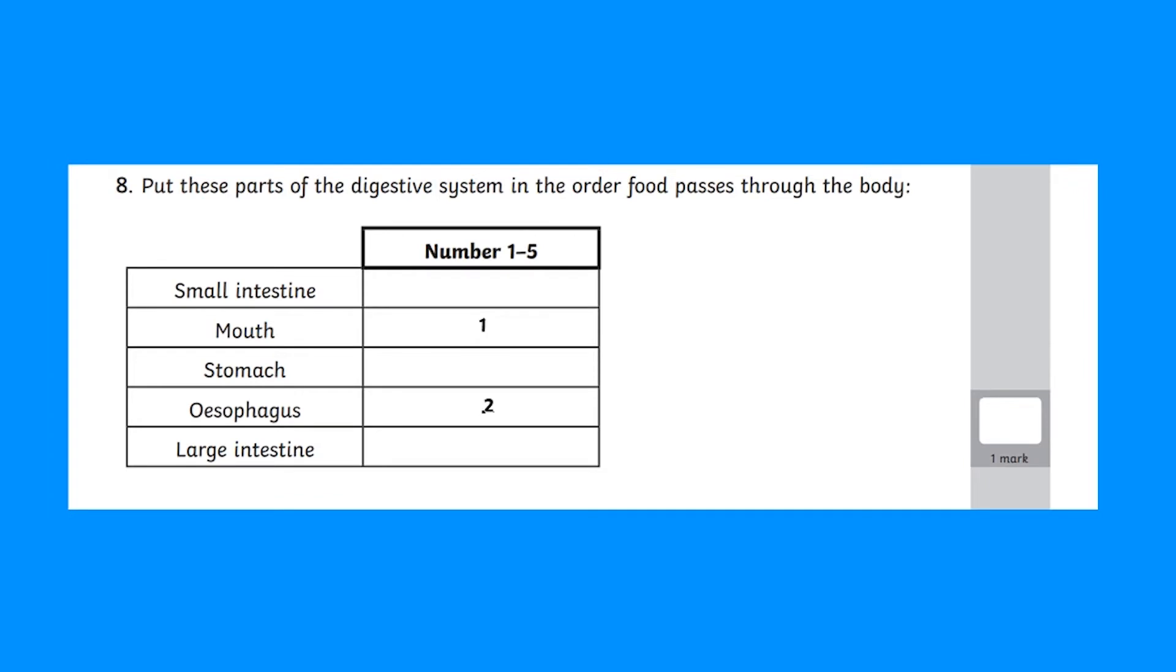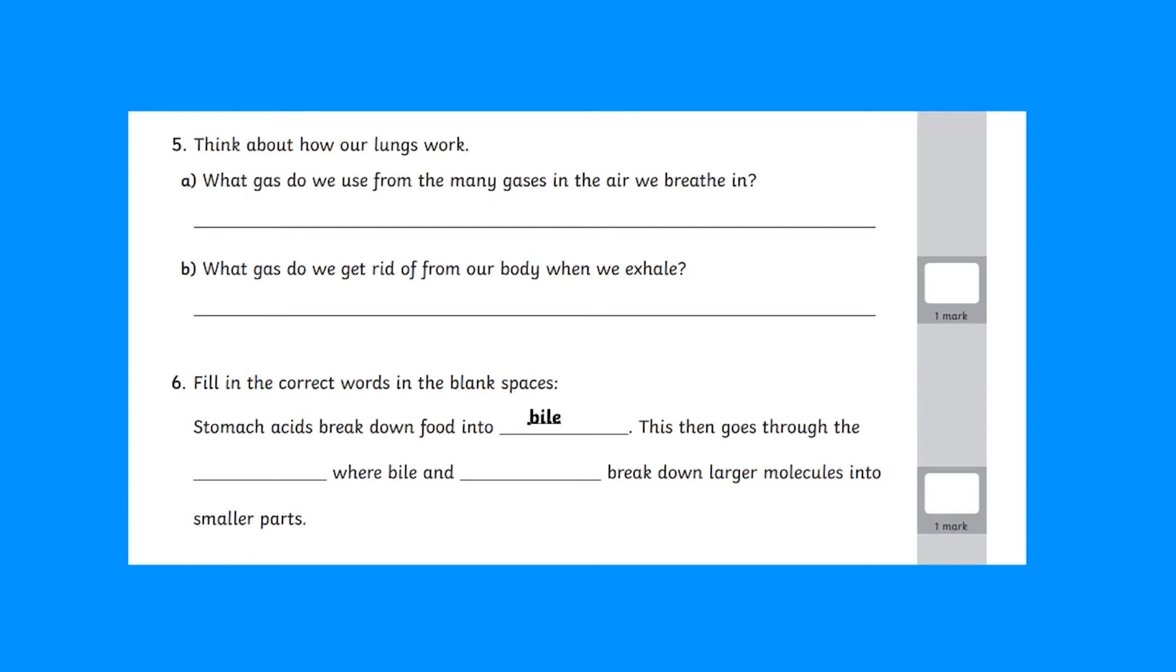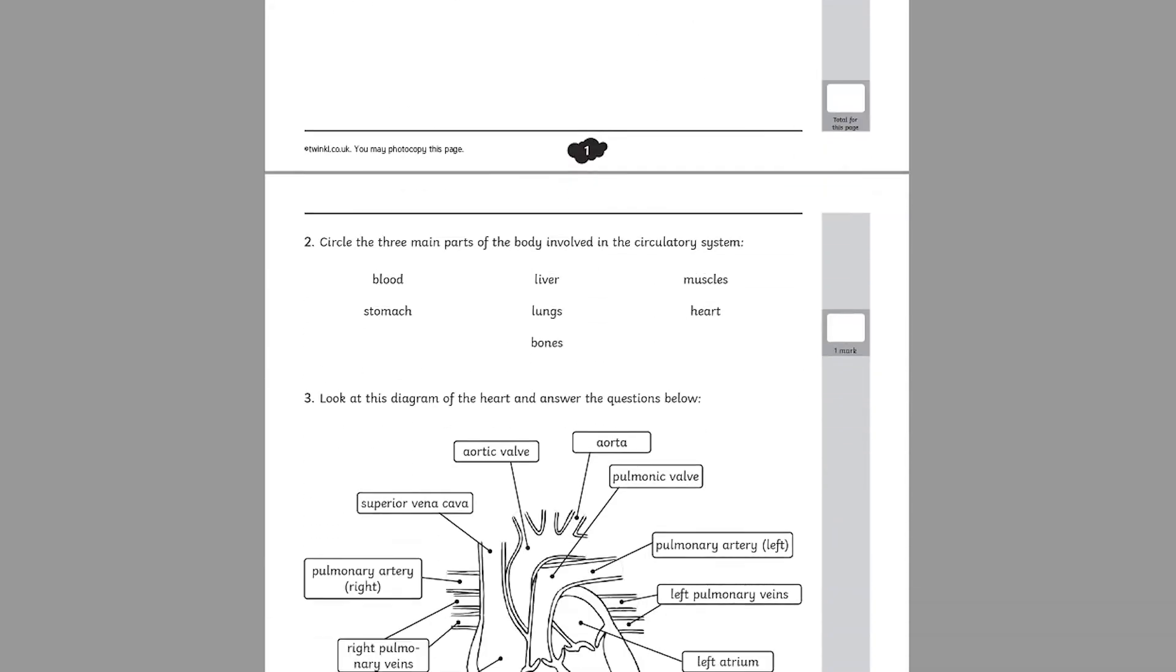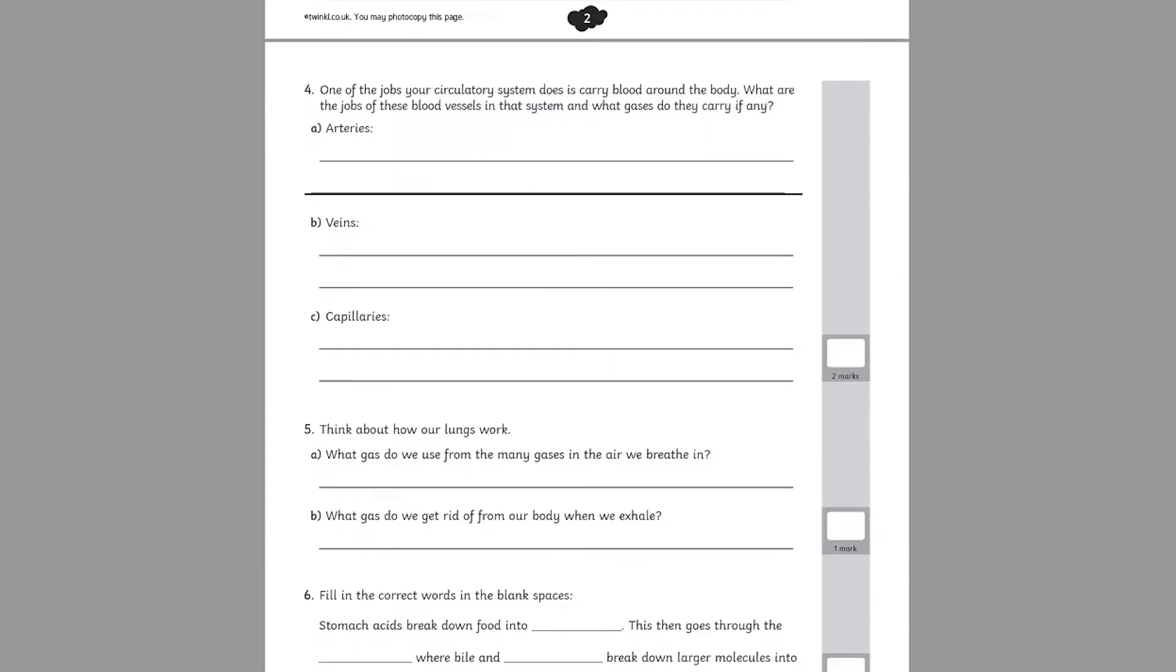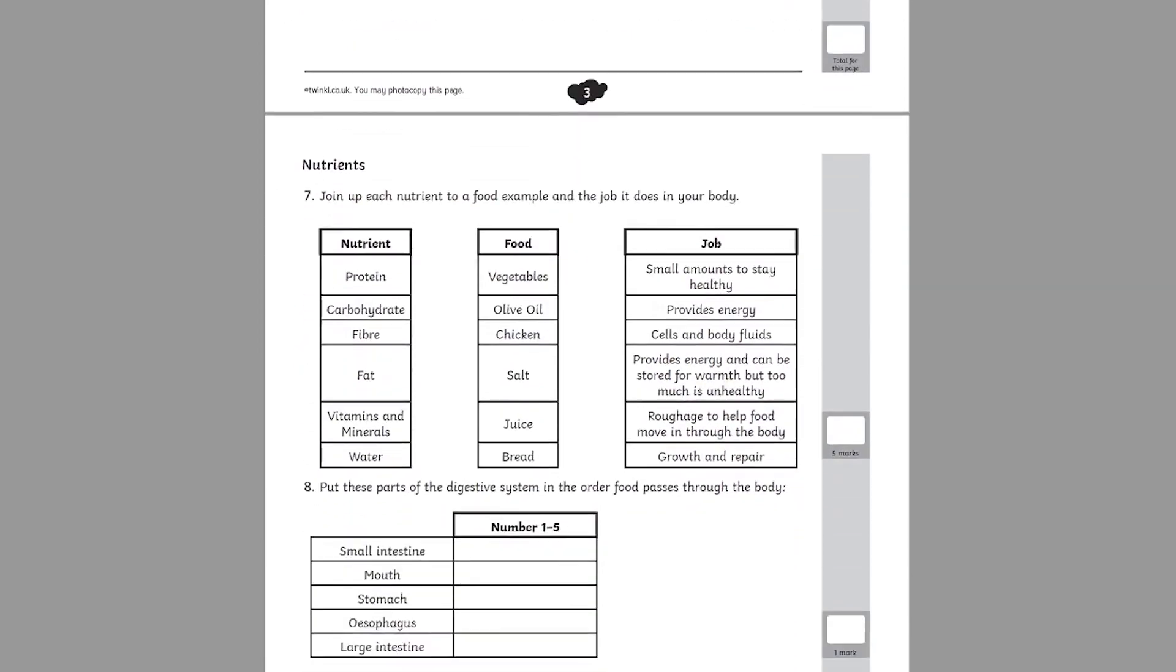This sort of assessment is really useful at highlighting misconceptions. Children could put the digestive system in the wrong order or use correct vocabulary in the wrong places in these statements. Use this assessment towards the end of a topic to allow time to overcome these misconceptions in your teaching.